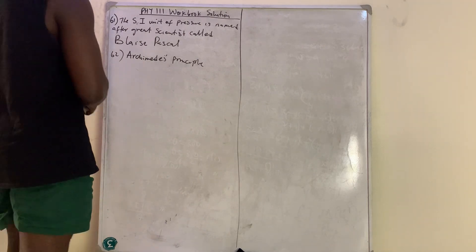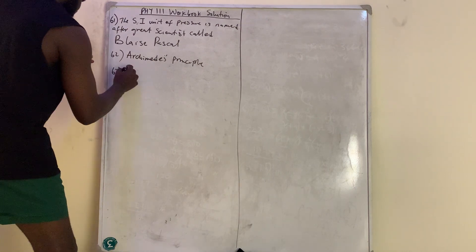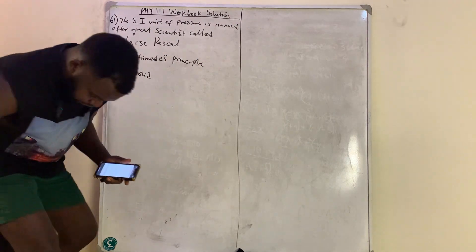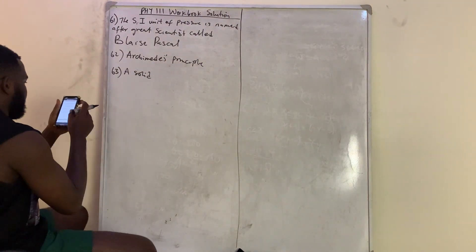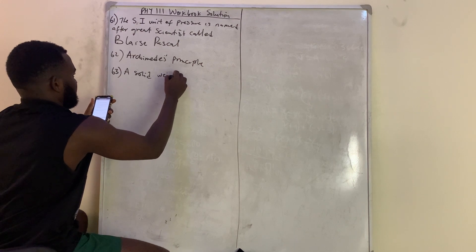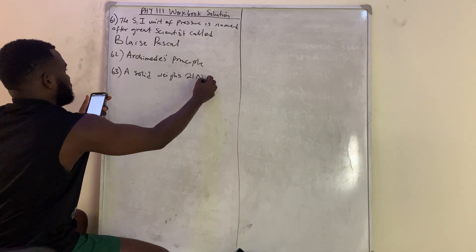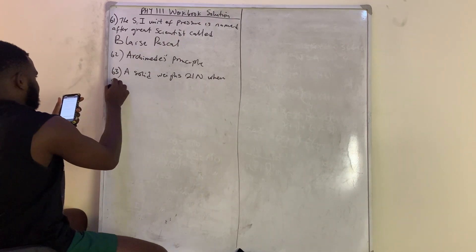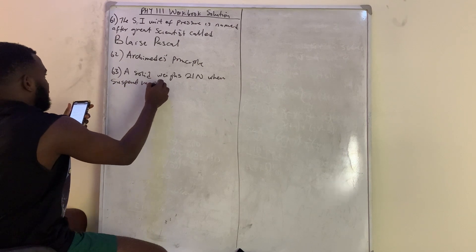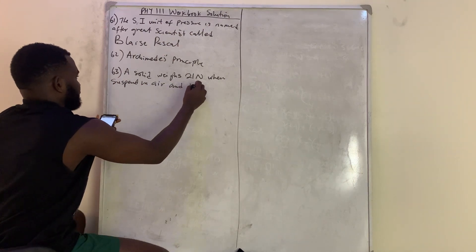Question number 63: A solid weighs 21 newtons when suspended in air and 15 newtons when suspended in water. We are asked to calculate the volume of the solid.